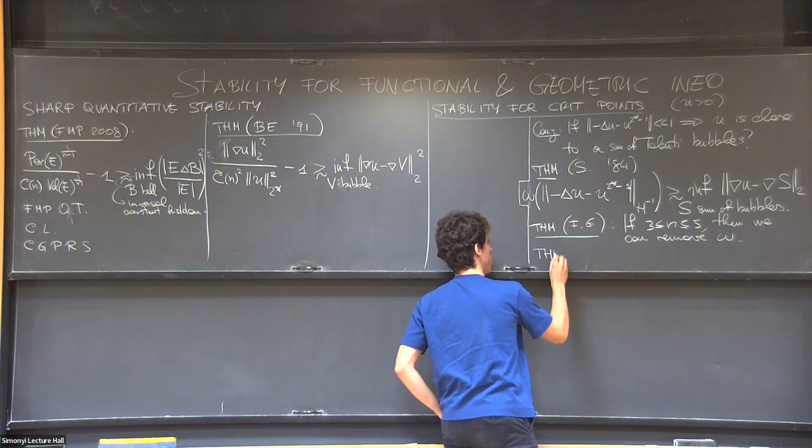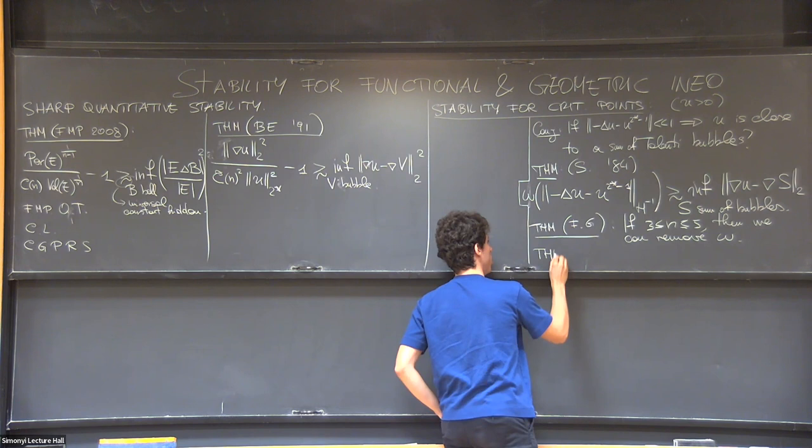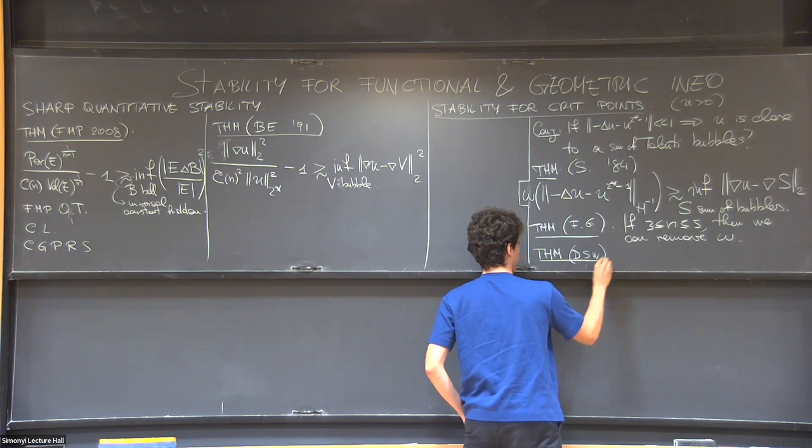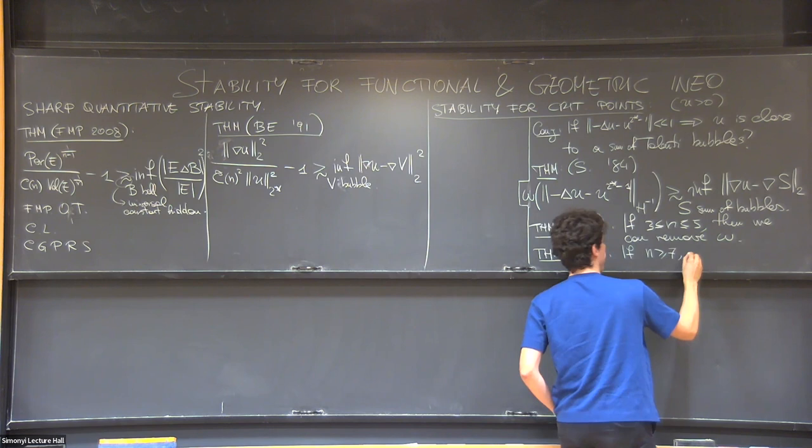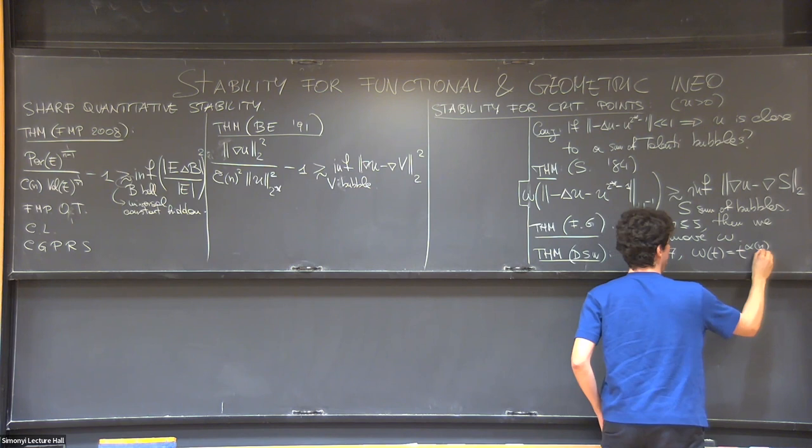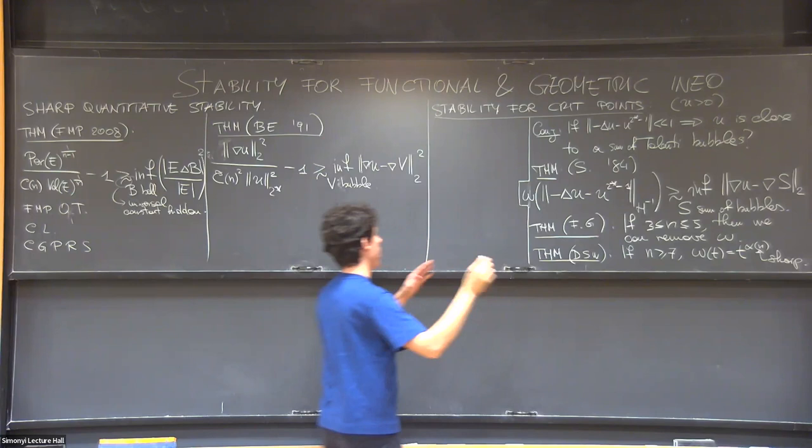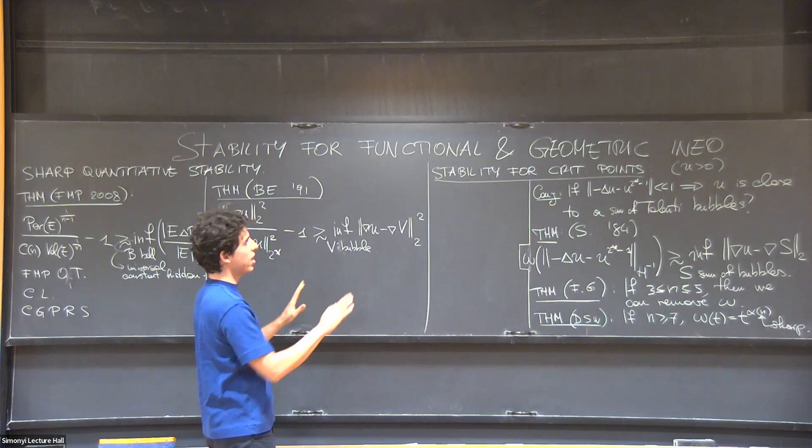We get something in higher dimension. We have to wait for Deng, Musso, and Wei. I don't know if... I think it's still a preprint. But in dimension greater or equal than six. Let's say seven. Then one can put omega equal to t to alpha n. And they can identify the sharp exponent. And for dimension equal to six, there are logarithms appearing. But they are able to detect them. Okay. So, in some sense, also the sharp stability. The sharp quantitative stability for critical points is closed for Sobolev inequality.